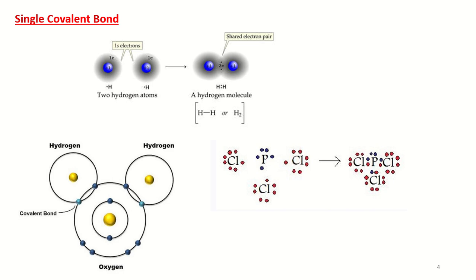Oxygen in H₂O is another example of single covalent bonding. Oxygen's atomic number is 8, with electronic configuration 1s², 2s², 2p⁴, giving 6 electrons in the outer shell. It needs two electrons to complete its octet. When two hydrogen atoms combine with oxygen, they form a covalent bond because this is the sharing of electrons — not a transfer — and this is also an example of a single covalent bond.